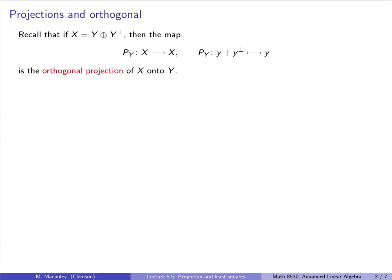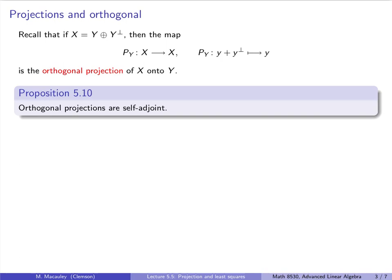Our next example of self-adjoint maps are orthogonal projections. We saw this a few lectures ago. If we have a subspace Y, then X is the direct sum of Y and its orthogonal complement, meaning every vector X can be written uniquely as y plus y-perp. The orthogonal projection onto Y just picks off the part in Y and discards the part in its orthogonal complement. It is elementary to show that orthogonal projections are self-adjoint.